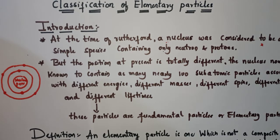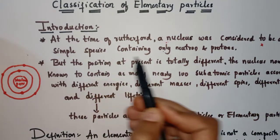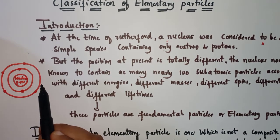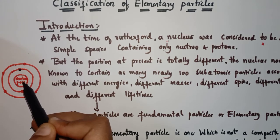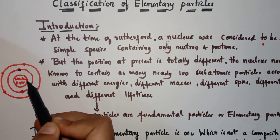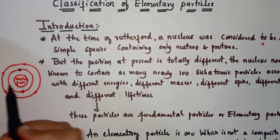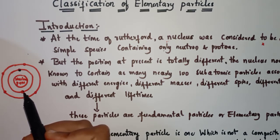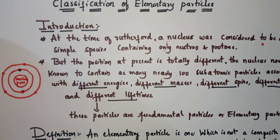At the time of Rutherford, a nucleus was considered to be a simple species containing only neutrons and protons. Inside the nucleus, neutrons and protons are present. But this consideration was at the time of Rutherford only. The position at present is totally different — now this nucleus not only contains protons and neutrons but it also contains nearly 100 subatomic particles associated with different energies, different masses, different spins, different charges, and different lifetimes.